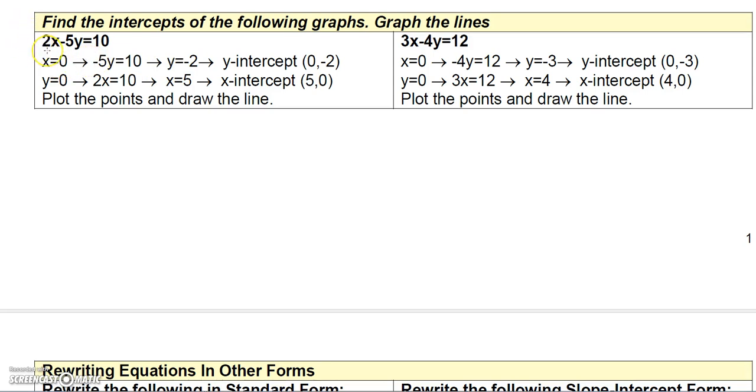Now this will work as long as your graph does not go through the origin, because if it goes through the origin then you only have one intercept and you'd have to find another point. But let's take a look at these two examples.